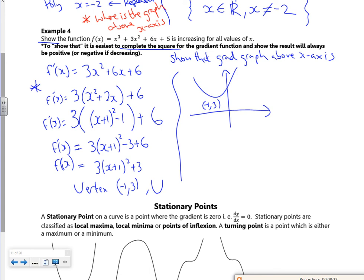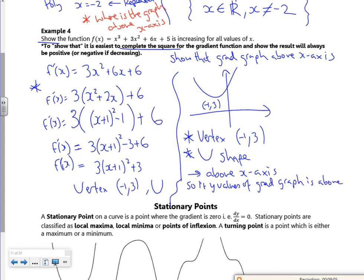Now I need to use both of those qualities to say that it's always above the x-axis. So the fact that the vertex is minus 1, 3, that I'm saying that it's above the x-axis, and it's a U shape, tells me that it's above the x-axis. So if the y-values of the gradient graph are above the x-axis, it must be increasing.